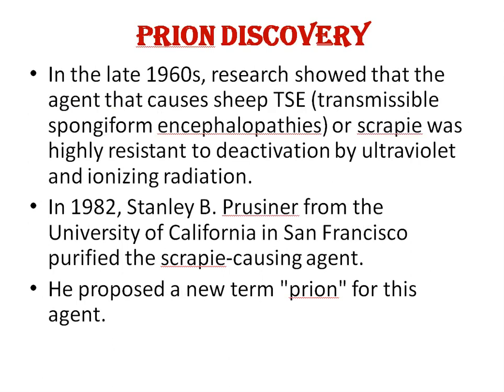Regarding prion discovery: in the late 1960s, research showed that the agent causing scrapie disease in sheep — another name being TSE, transmissible spongiform encephalopathy — was highly resistant to deactivation by ultraviolet and ionizing radiations. As we know, UV and ionizing radiations would usually destroy any pathogen containing nucleic acid. In 1982, Stanley B. Prusiner from the University of California in San Francisco purified this scrapie-causing agent and proposed the new term 'prion' for this agent.